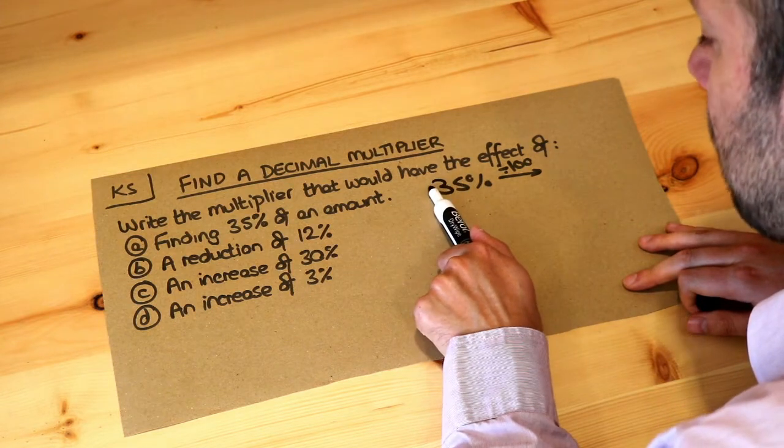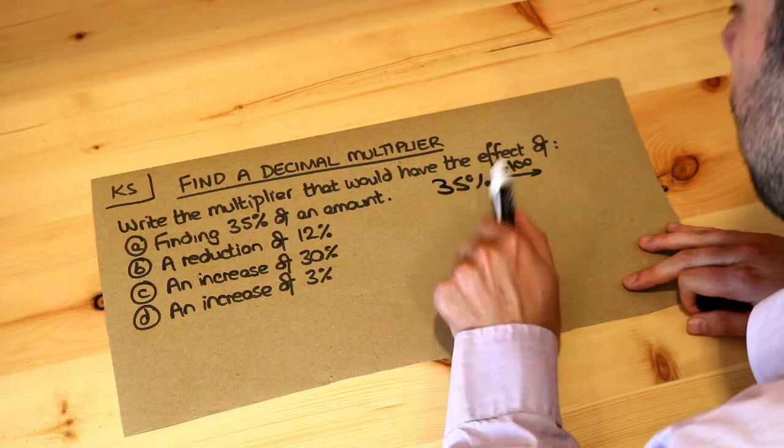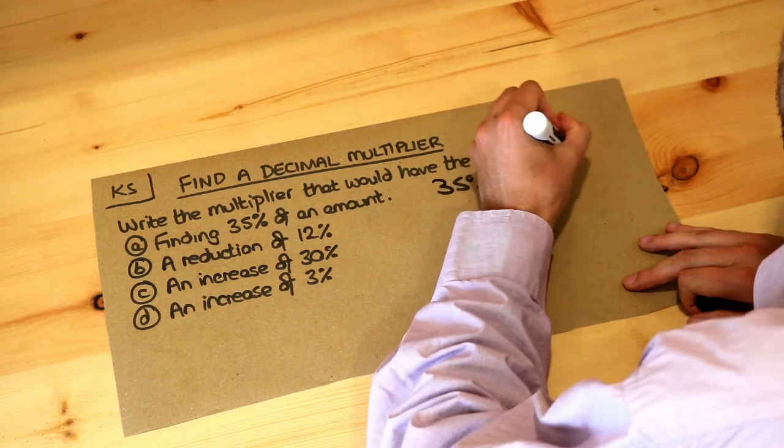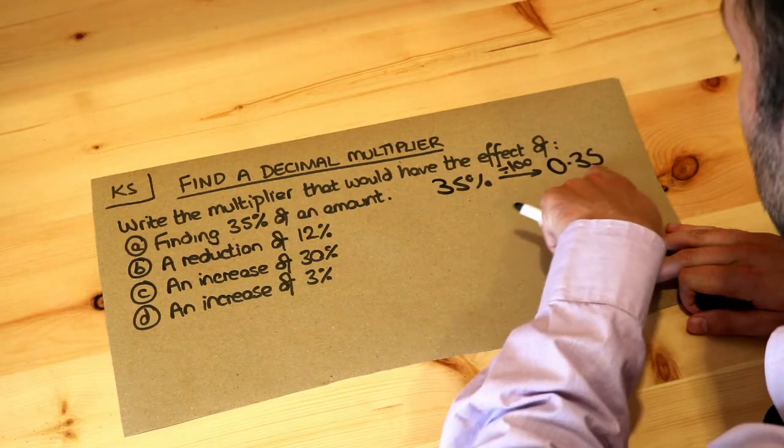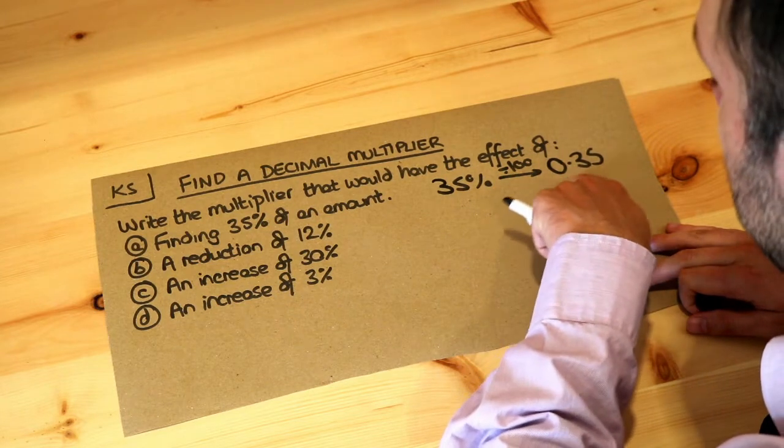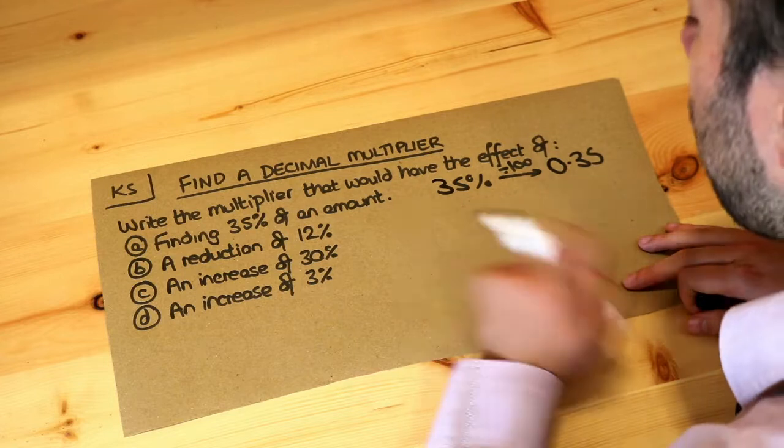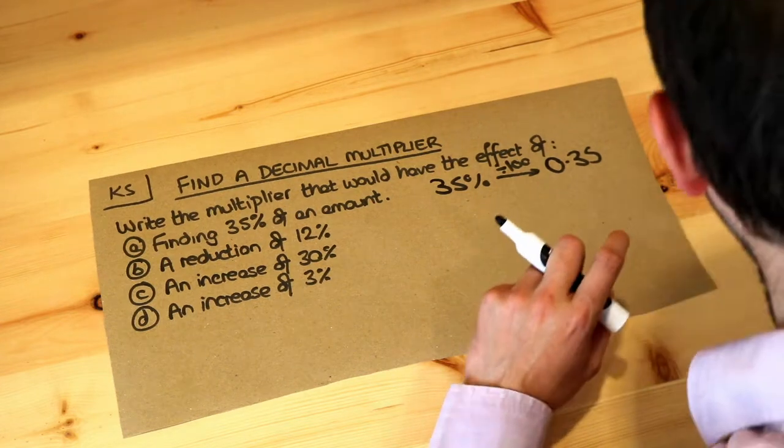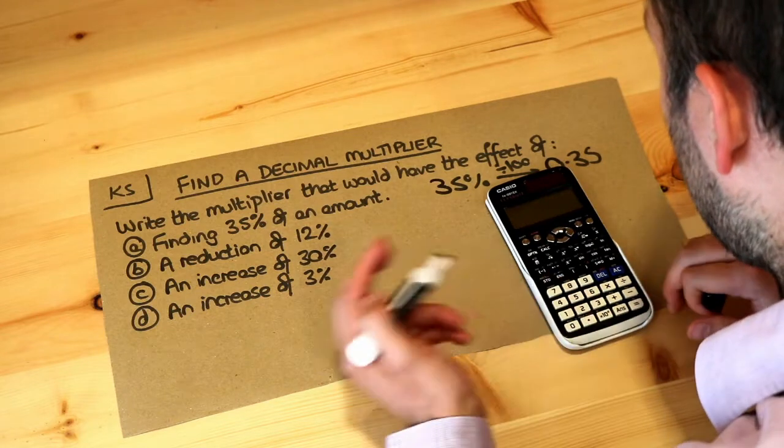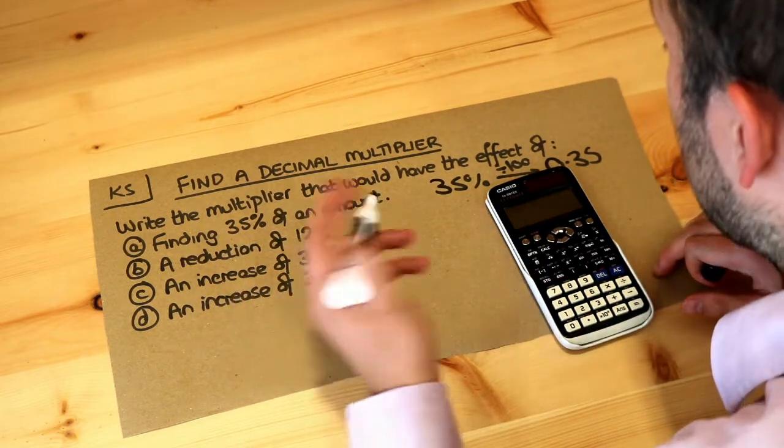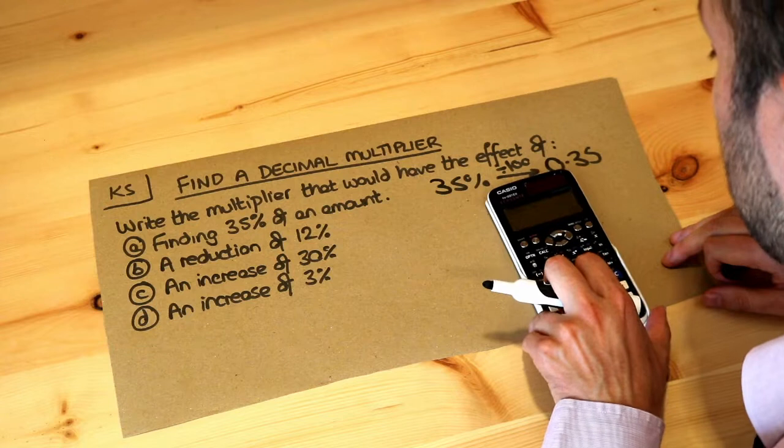One, two, so it's just before the 3. So we have 0.35. So therefore if we times a number by 0.35, this decimal multiplier here, then that will find 35% of the amount. If say I times 500 by 0.35, that gives me 175, and that indeed is 35% of 500.